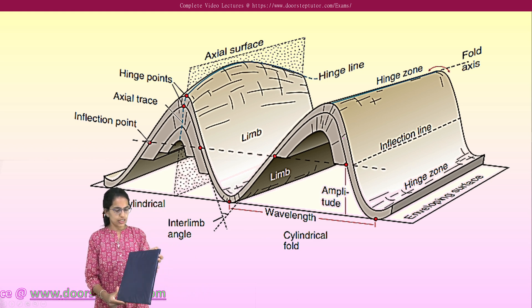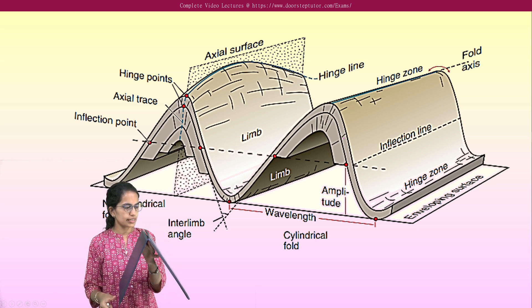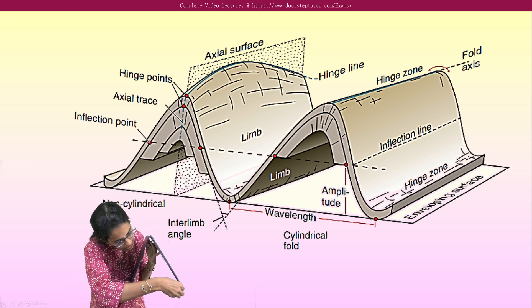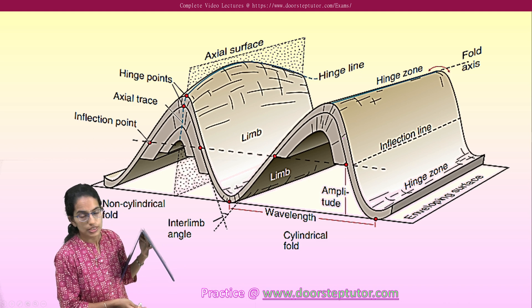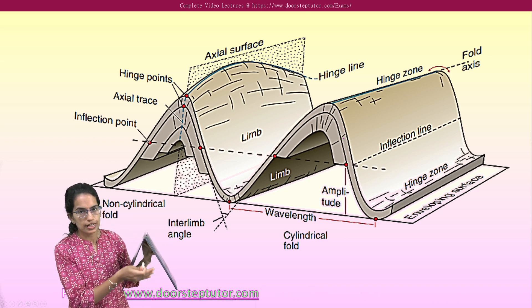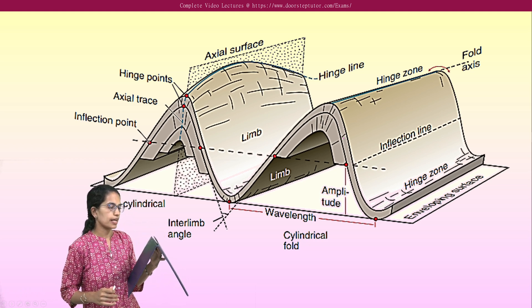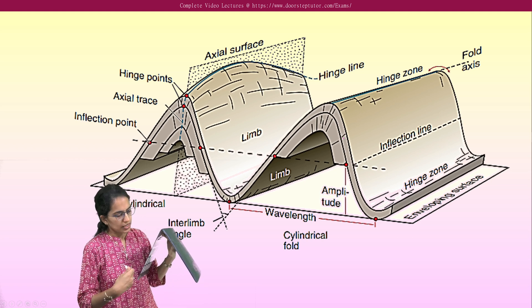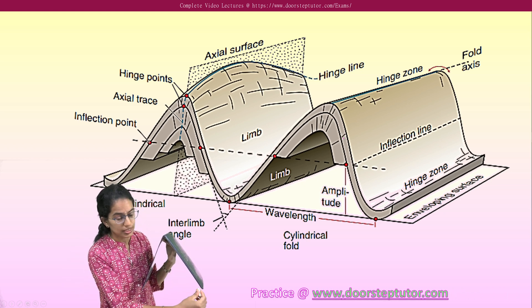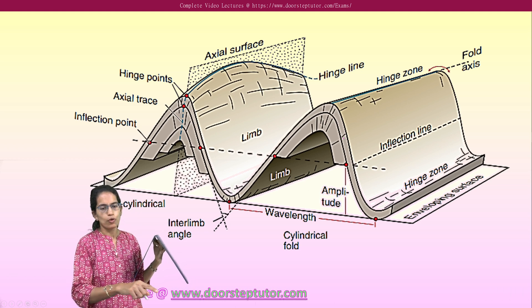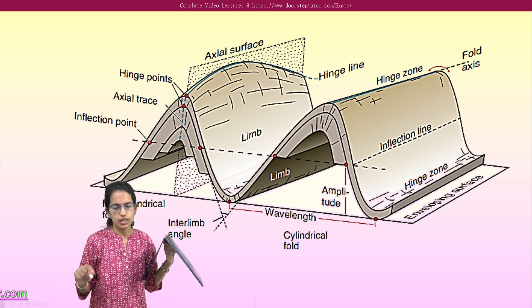To understand fold structures, consider a simple 3D diagram. Take a sheet and create a fold. When studying the surface from above, you see the surface expression, but beneath the surface there is the internal fold structure inside the rock. This fold can be above or below the earth's surface. This particular fold is a chevron fold because it is angular. Another type could be a round or curved fold.